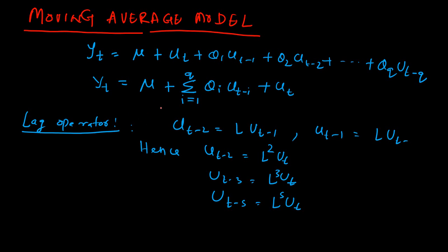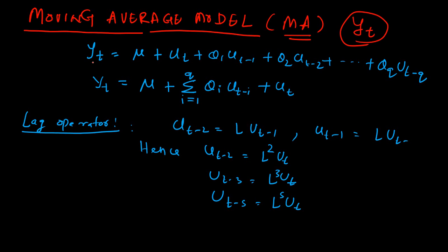In this video I am going to talk about the moving average model, or in short the MA model, where MA stands for moving average. This is a very simple time series model, where the time series we are considering is YT. We have talked about white noise processes in the previous video.